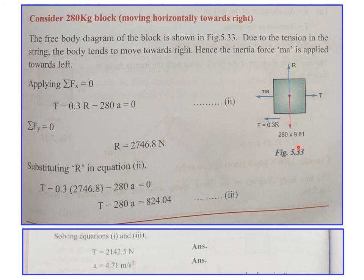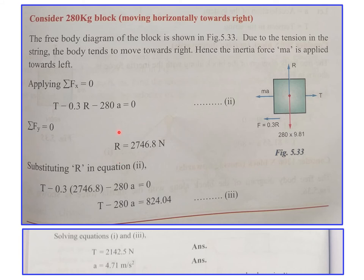For the 280 kg block: self-weight, normal reaction R, tension T, inertia force m·a, and frictional force 0.3·R are marked. Applying ΣFx = 0: T − m·a − 0.3R = 0 (equation 2). Applying ΣFy = 0 gives R. Substituting R back into equation 2 gives equation 3. Solving equations 1 and 3: tension T = 2142.5 N and acceleration a = 4.71 m/s².